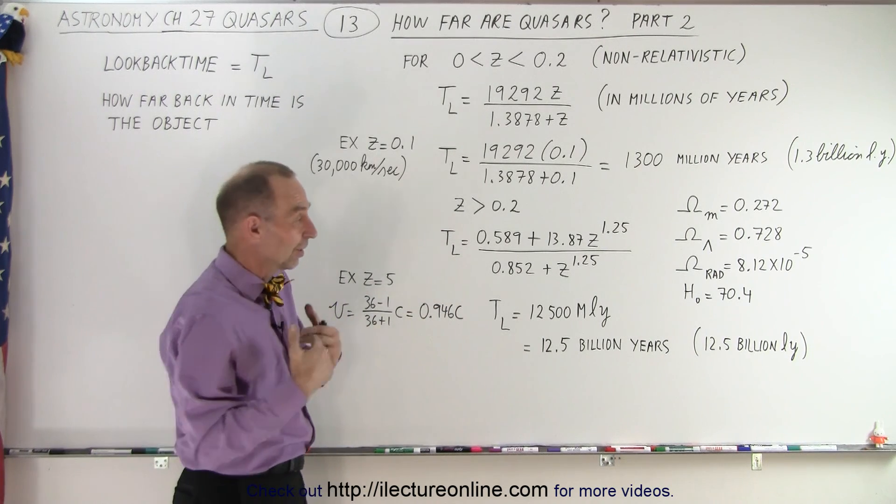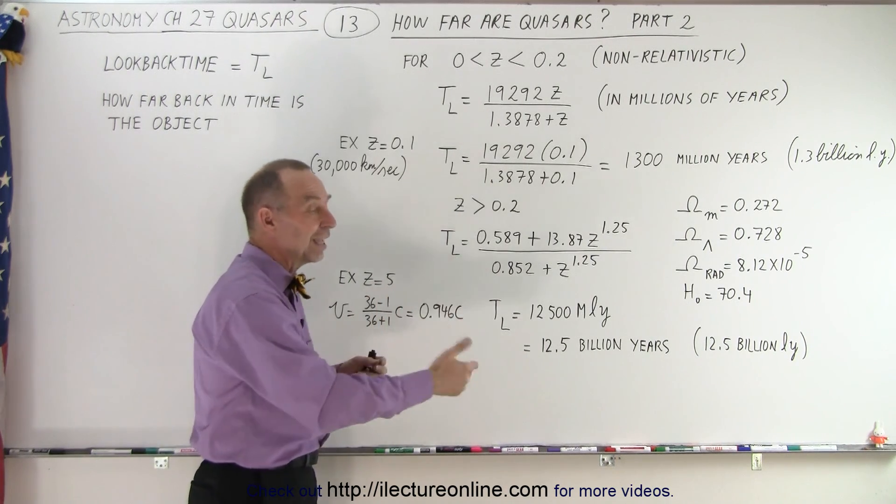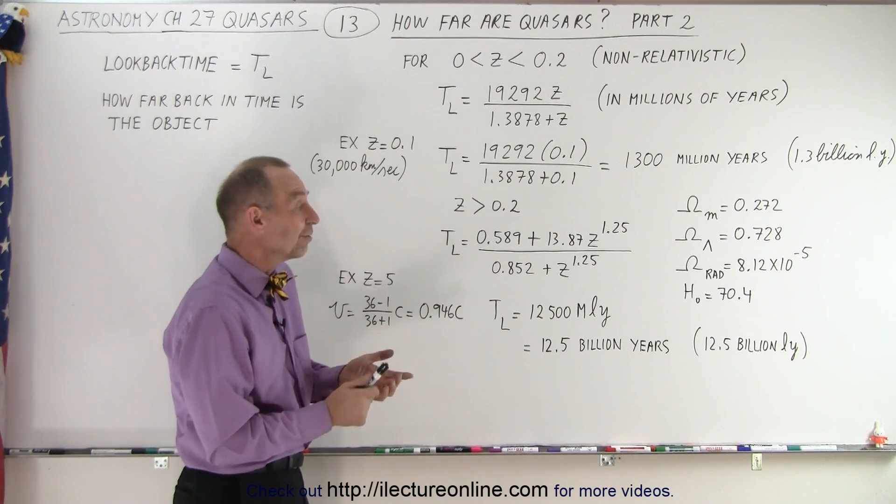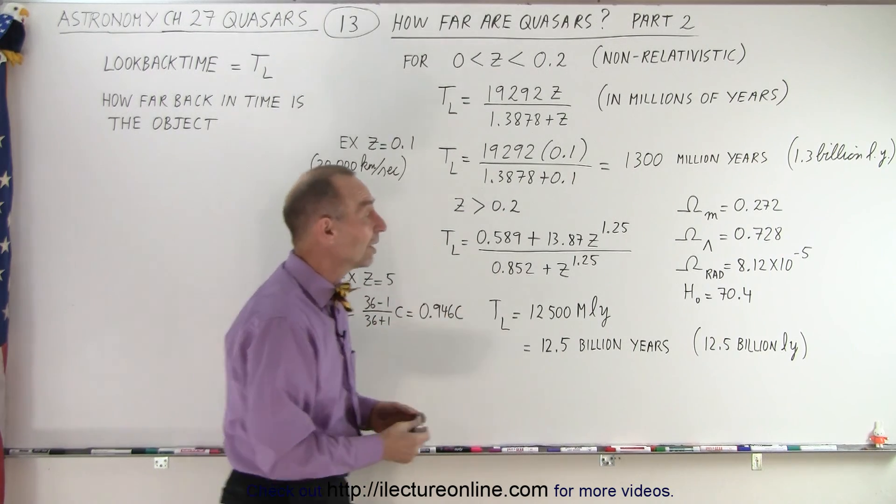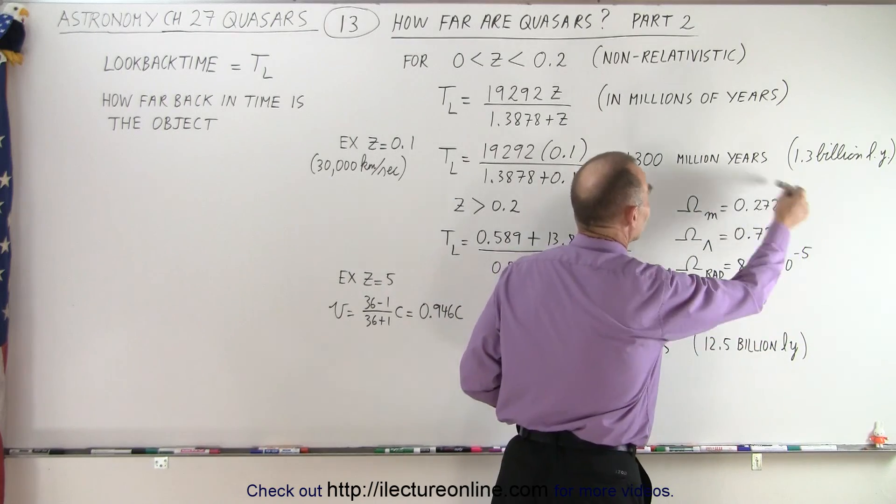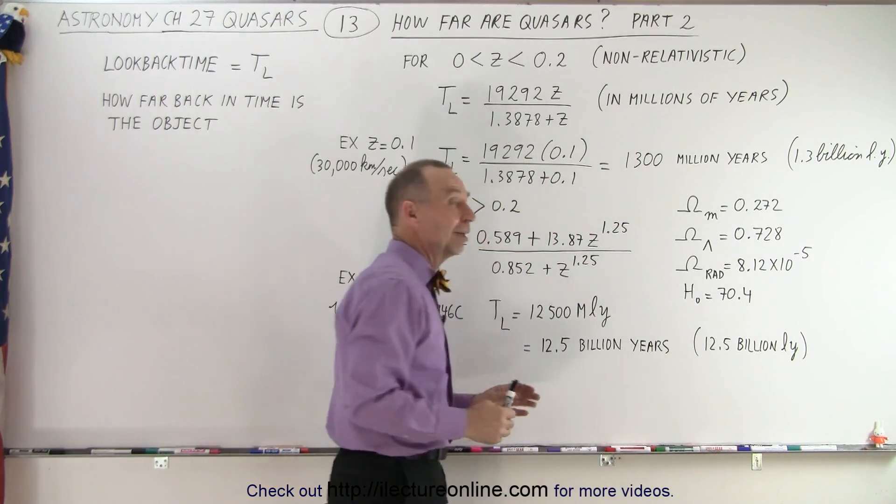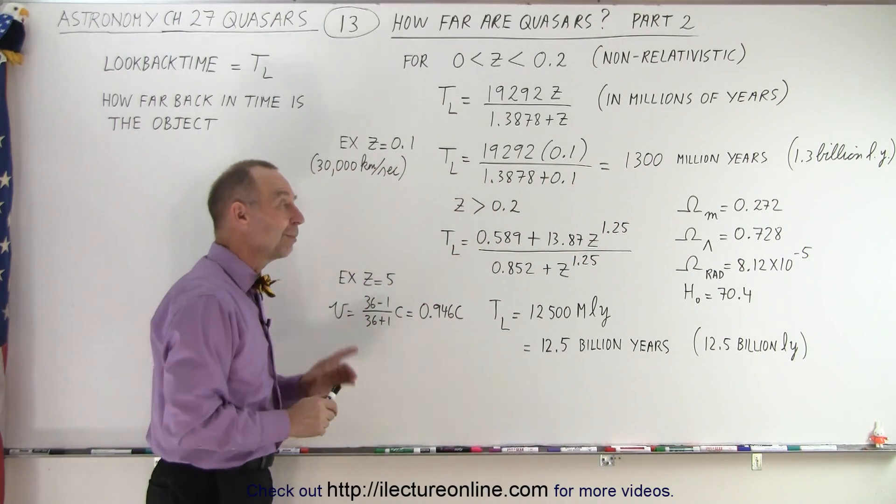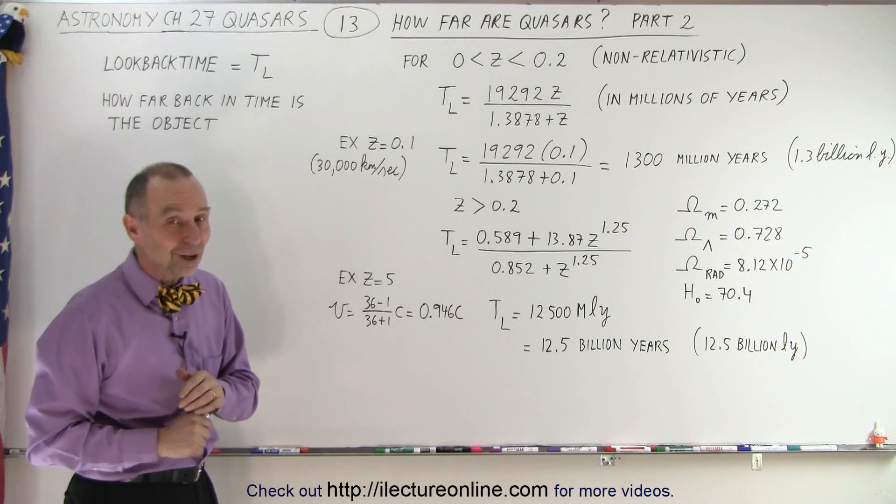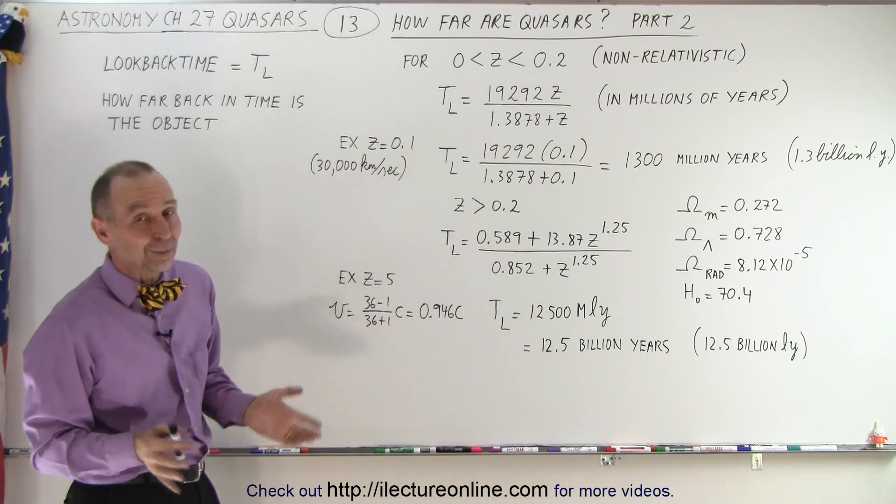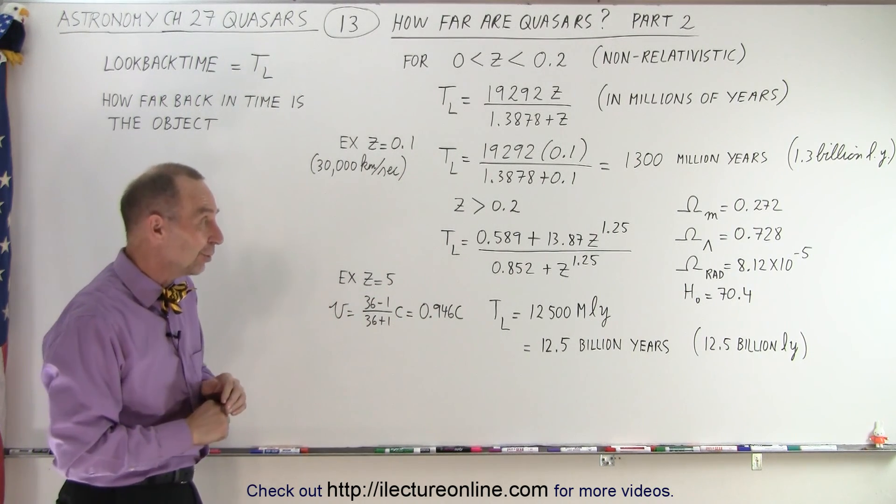not the distance of the object today. It's, of course, much farther away. And those numbers are only as correct as we can put in proper values for these four constants, and believe me, it's going to be a while before we get accurate values on all those constants. Hubble constant, we're getting close, but the others, there's still a ways to go.